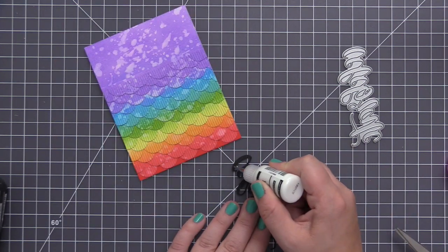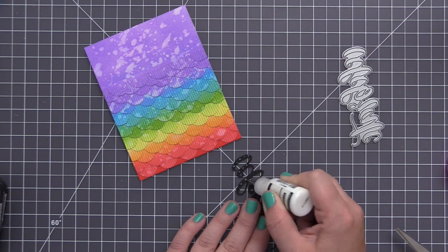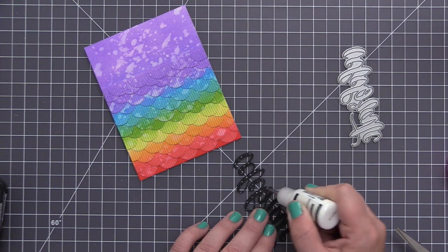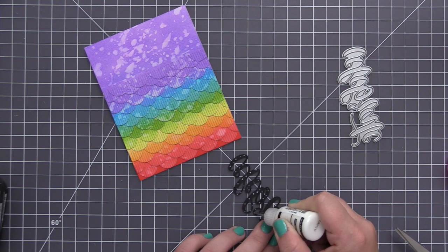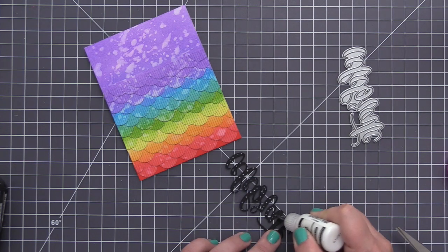So I've die cut this just from black cardstock and I'm just going to take some matte multi-medium and fully cover the entire back of this die cut. I like to just take my time and add little dots of glue all the way around this, and that is going to allow us to easily place this onto the card and make sure that it stays fully adhered to the card front.